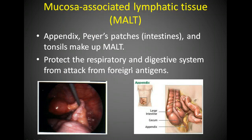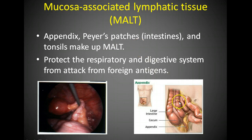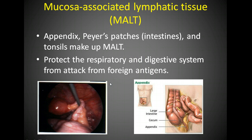There's a structure called the mucosa associated lymphatic tissue, or MALT for short. It consists of the appendix, Peyer's patches — which are located along the intestines — and the tonsils. The two systems where you're most likely to bring in microorganisms into the body are your respiratory and digestive systems, so that's why these structures are located where they are to help protect from infection.